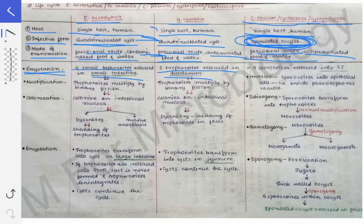In case of Giardia lamblia, two trophozoites are released in the duodenum. And in case of the coccidian parasites, four sporozoids are released into the small intestine.